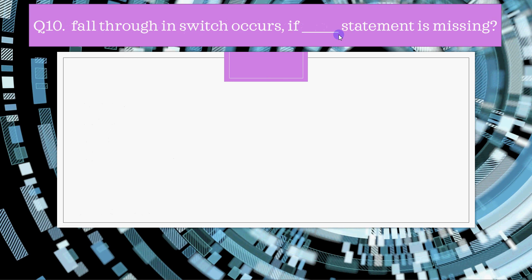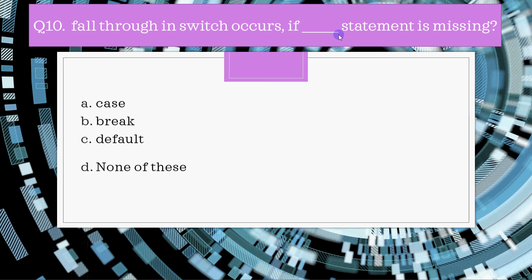The last question for this video: fall through in switch occurs if which statement is missing? The answer is the break statement. If you don't have a break statement in a matching case, execution continues into the next cases as well. This situation is called fall through.